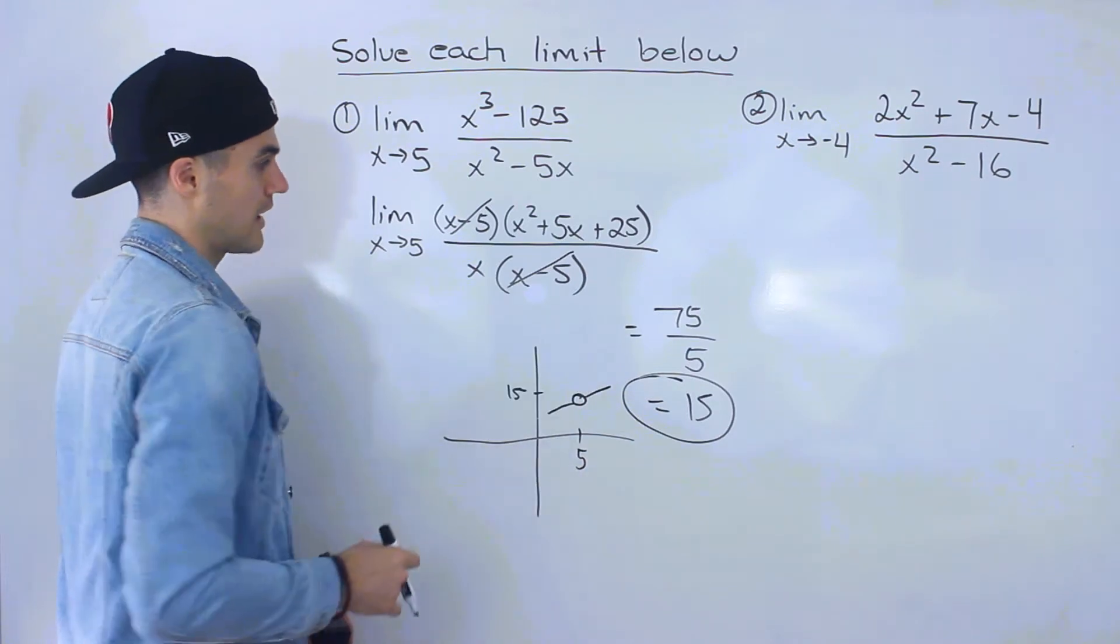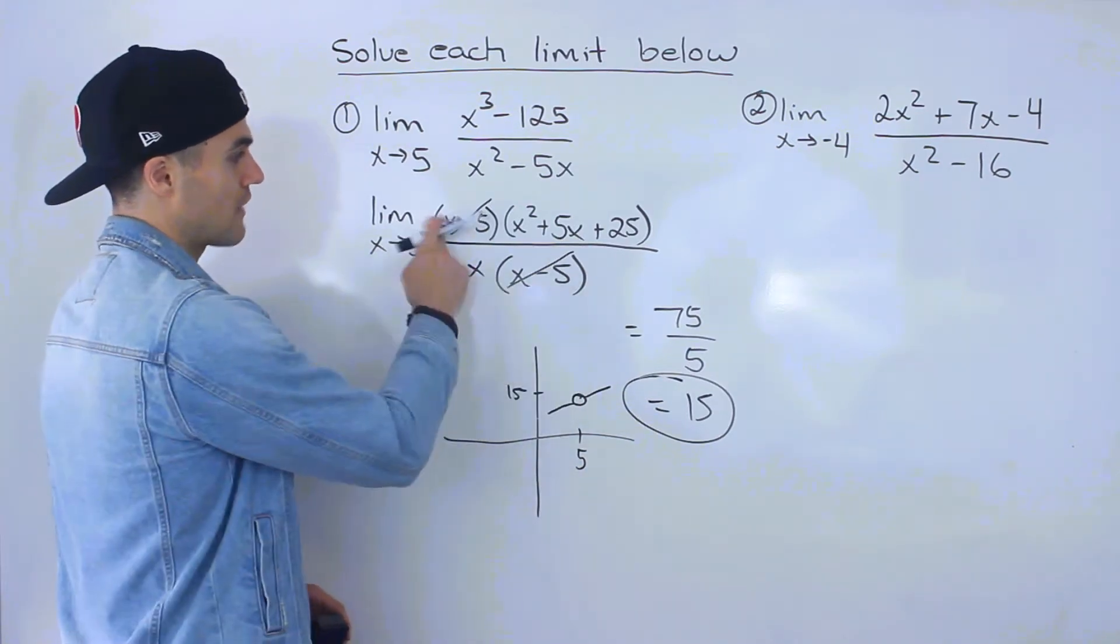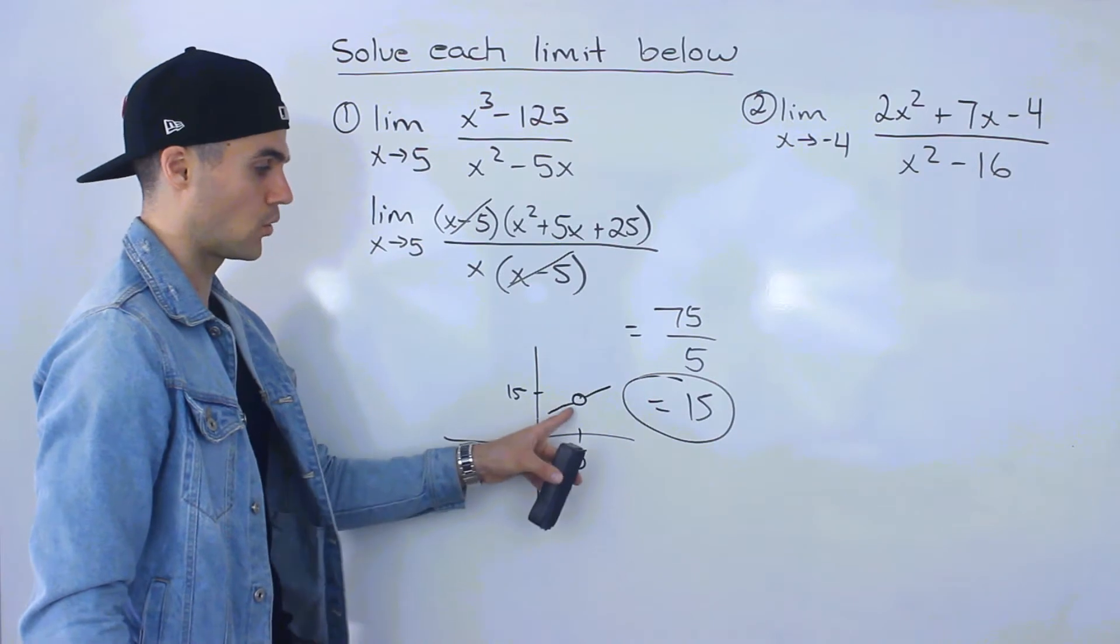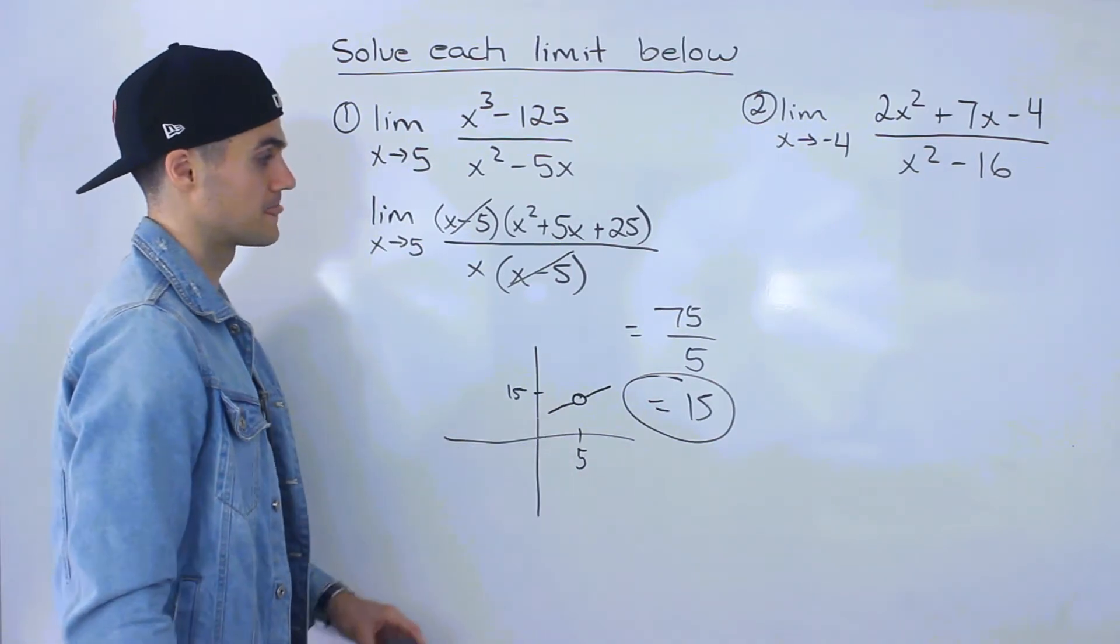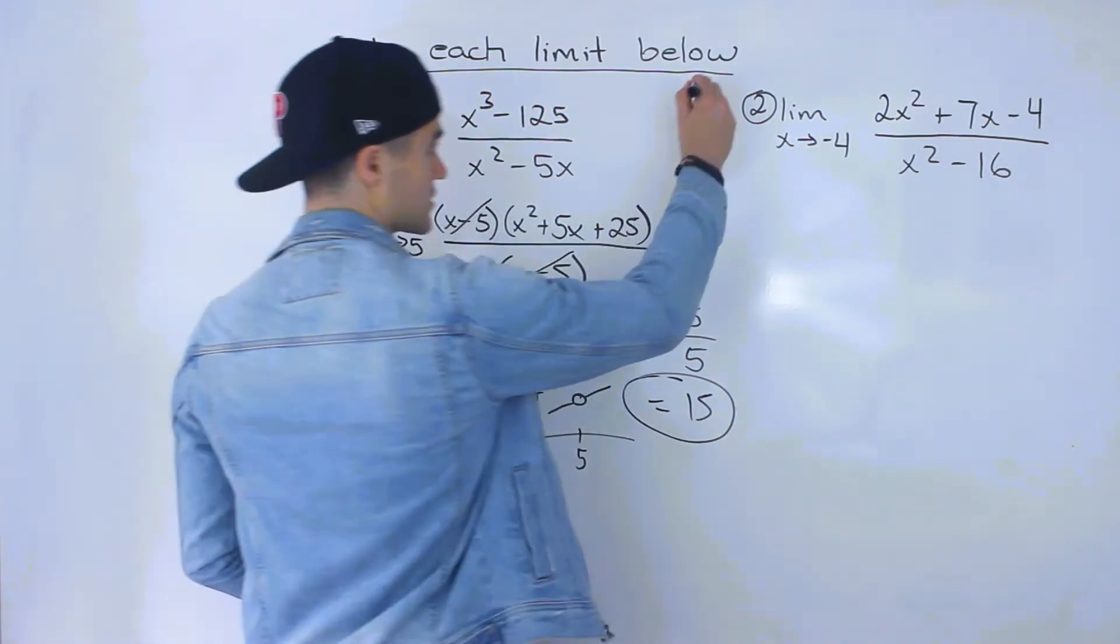You don't necessarily have to know the diagram. I just wanted to show you whenever you have factors cancel out like this, it means there's a hole at that x value, right? So 15 is the answer for number 1.